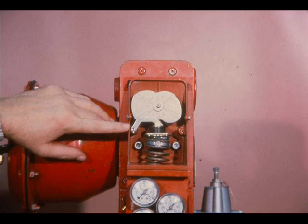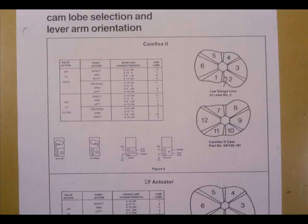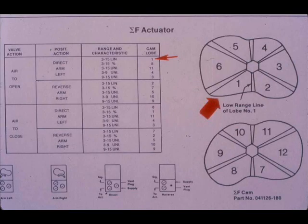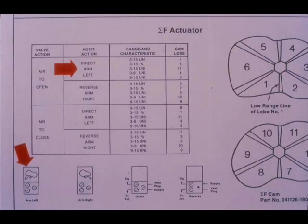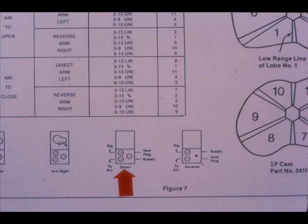The cam lobe, lever arm orientation, and air supply connection are dependent on the span, valve characteristic, and positioner action. This page from the Mason-Eland instruction manual provides that information. The example used will be for an air-to-open Sigma F valve with a 3 to 15 PSIG direct acting positioner giving the valve a linear characteristic. From the instruction manual we find that cam lobe 1 will provide a linear characteristic for a 3 to 15 PSIG input. For a direct acting positioner, the lever arm will be mounted on the left side.